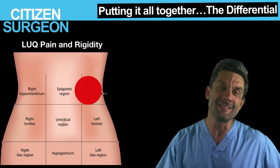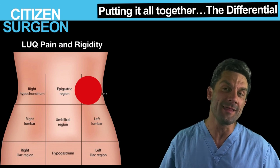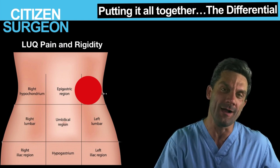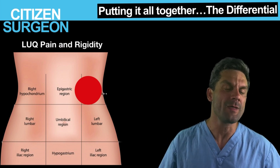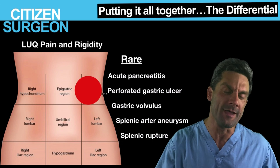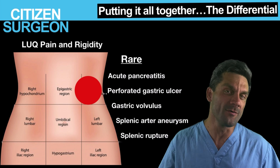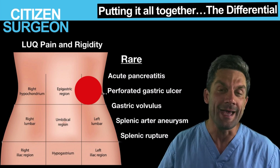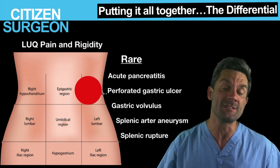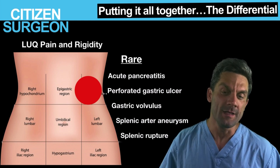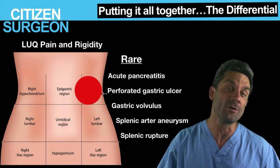Moving to the left upper quadrant — this is a little bit more rare. What are you going to think about if somebody comes in with pain or rigidity in the left upper quadrant? Here you would think about acute pancreatitis — the tail of the pancreas is inflamed, giving left upper quadrant pain and rigidity. You could think about a perforated gastric ulcer, gastric volvulus — maybe organoaxial gastric volvulus — and also splenic rupture or splenic artery aneurysm.